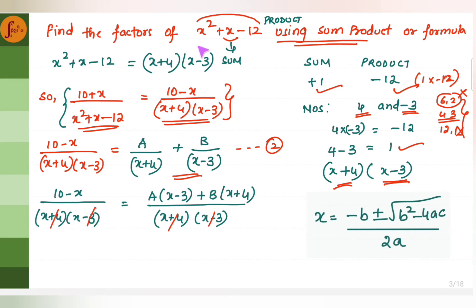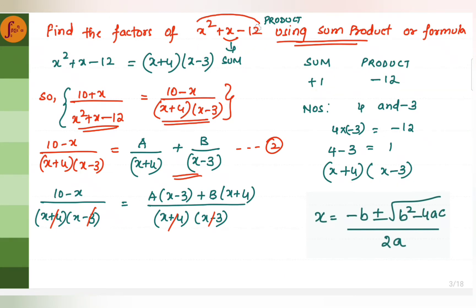In the sum-product method, we find the product and the sum. The product is obtained by multiplying the constant term minus 12 with the coefficient of x squared. The coefficient of x squared is 1, so minus 12 into 1 is minus 12. The sum is the coefficient of x, which is 1. We need to choose two numbers whose product is minus 12 and whose sum is 1.